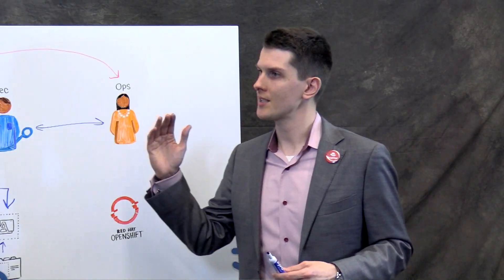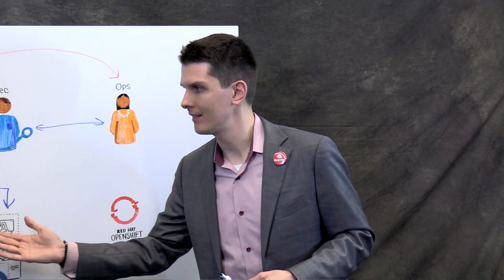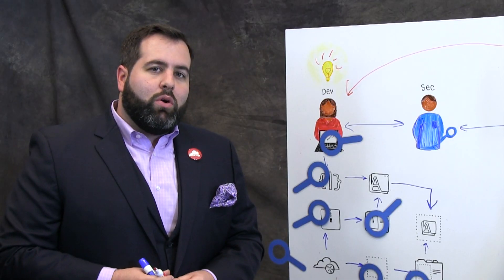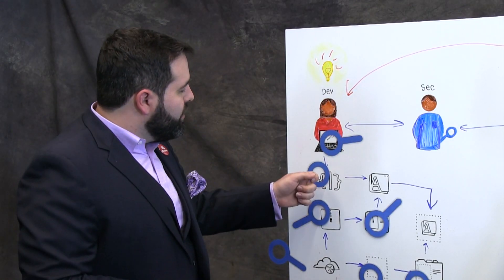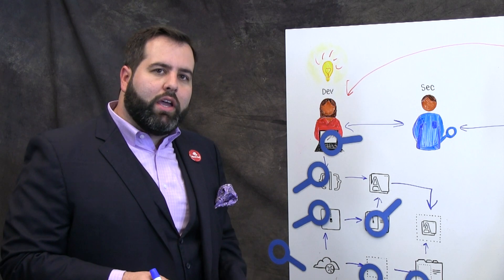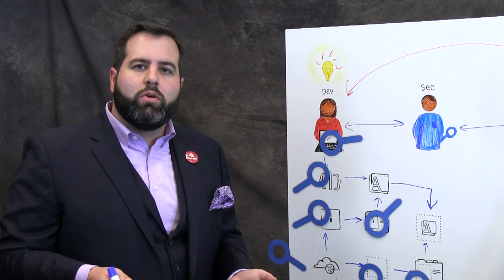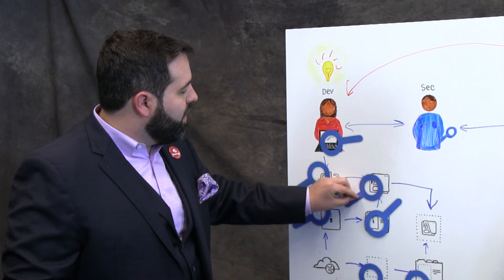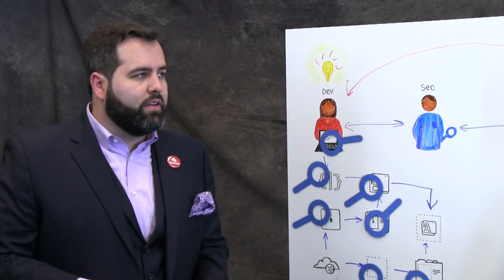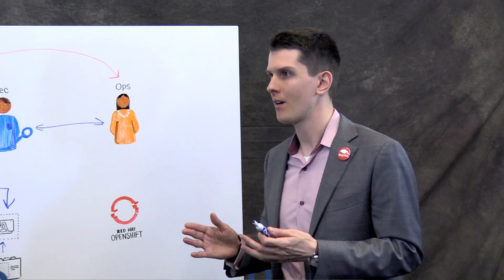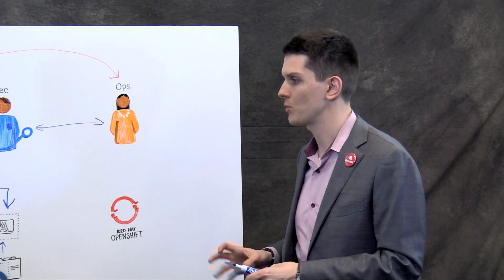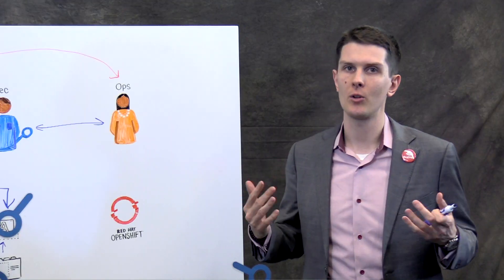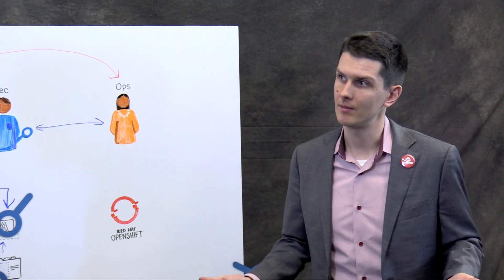Since we trust our code and we trust our dependencies, does that mean we automatically trust our application too? This is a case where the whole is in fact greater than the sum of the parts. Even though we're scanning everything going into the application, there might be certain security issues that are only exposed once the application is built — so it will behoove us to actually scan that resulting application artifact. Following that same logic, we should probably scan our built container image as well, because combining our application with the base container image might reveal a vulnerability that wasn't otherwise there.